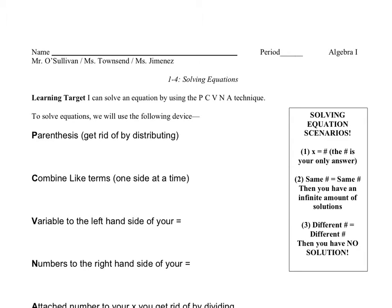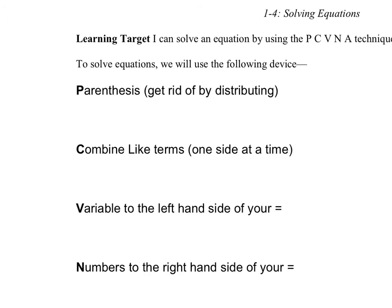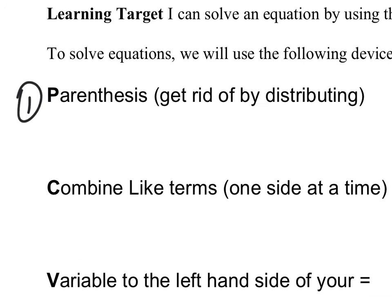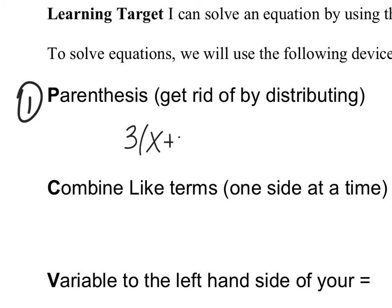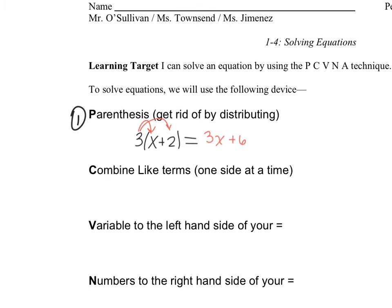So to solve equations, our learning target today is: I can solve an equation by using the PCVNA technique. To solve an equation, we are going to be using the following device: PCVNA. Step one is the parentheses. What we want to do is make sure that we can get rid of our parentheses by distributing. For instance, if I have 3(x + 2), I can distribute that to be 3 times x, which is 3x, and 3 times 2, which is a positive 6. That's what we mean by get rid of your parentheses by distributing.